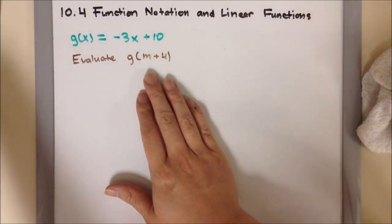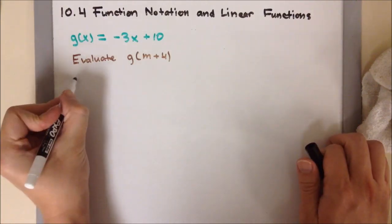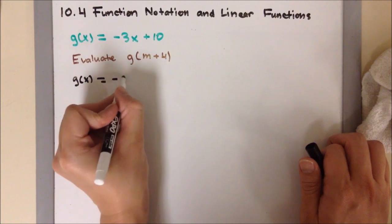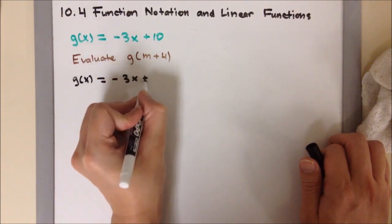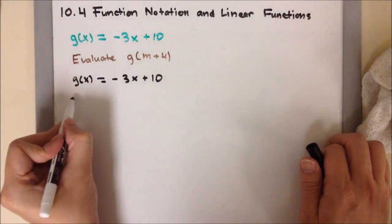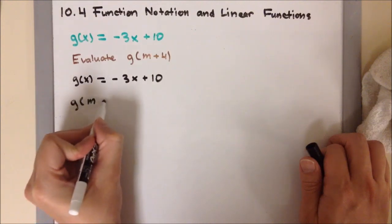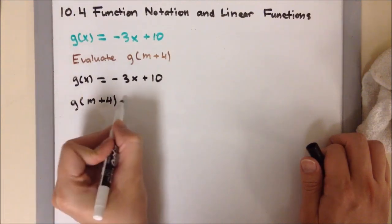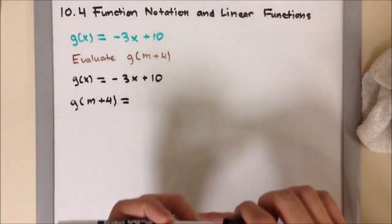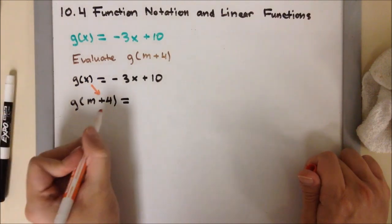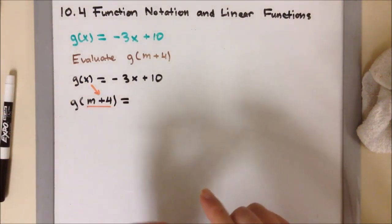Alright, so let's write out the work. So our function is g of x equals negative 3x plus 10. And it's asking you to evaluate at g of m plus 4. So what it means is that I'm switching out my x and replacing it with m plus 4, the whole term, m plus 4.